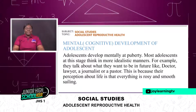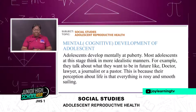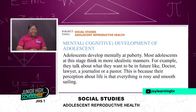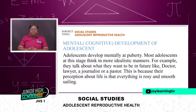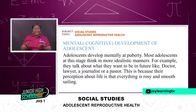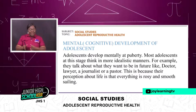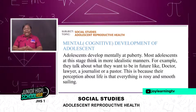Now let's look at the mental or cognitive development of adolescence — how the adolescent thinks and behaves cognitively with the mind. Adolescents develop mentally at puberty. Most adolescents at this stage think in a more idealistic manner. For example, they talk about what they want to be in the future — like some of you may say I want to be a doctor, a lawyer, a journalist, a pastor. This is because their perception about life is that everything is rosy and smooth.